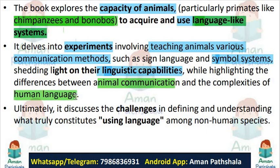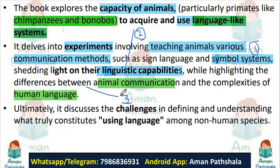These are very important points. The purpose of this entire chapter is: number one, to teach animals certain symbols; number two, so that we can know their linguistic capabilities — how capable they are; and number three, so that we can differentiate how much difference there is between human language and animal language, what the complexities are, and what the difference in capabilities is.